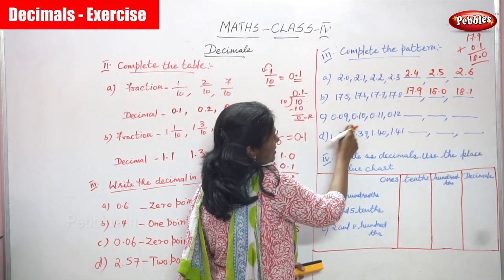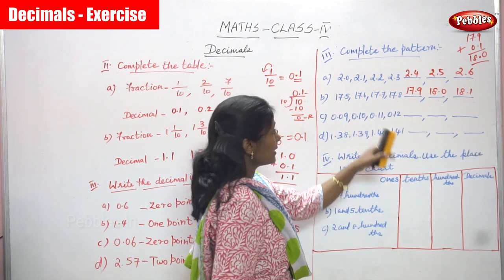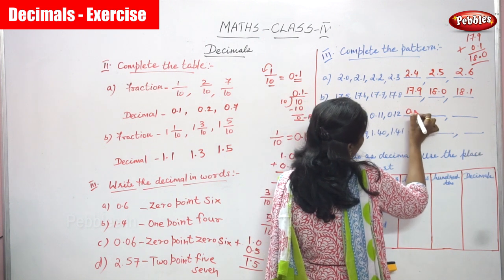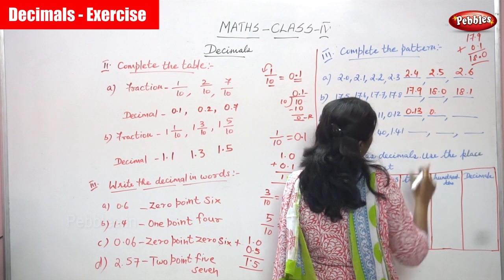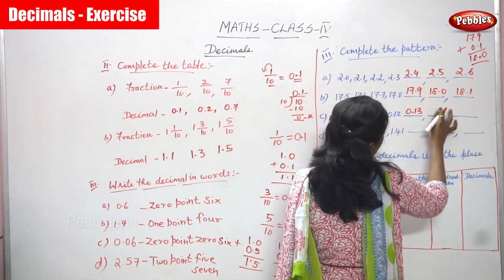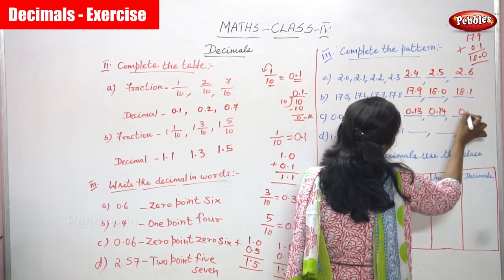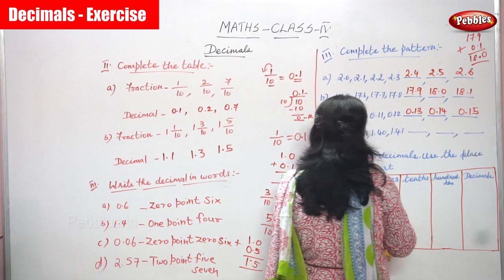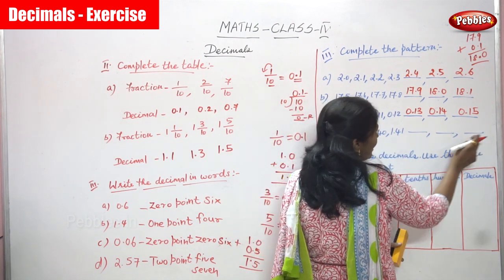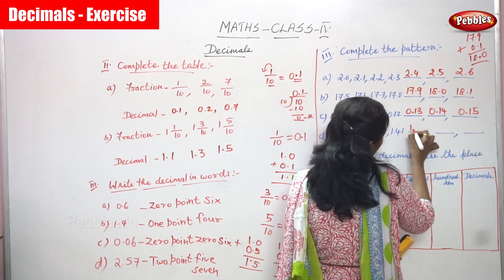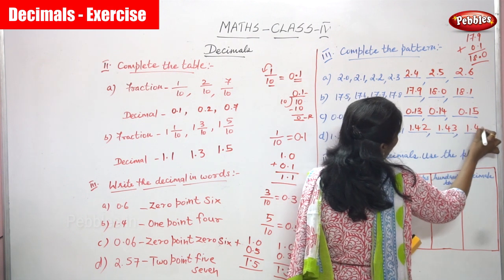Next pattern C: 0.09, 0.10, 0.11, 0.12 — the remaining three blanks are 0.13, 0.14, and 0.15. Next pattern D: 1.38, 1.39, 1.40, 1.41 — the remaining three blanks you have to fill are 1.42, 1.43, and 1.44. This completes the pattern exercise.